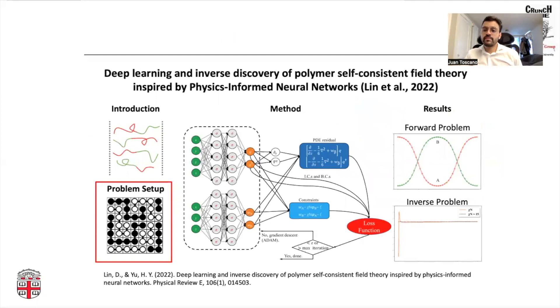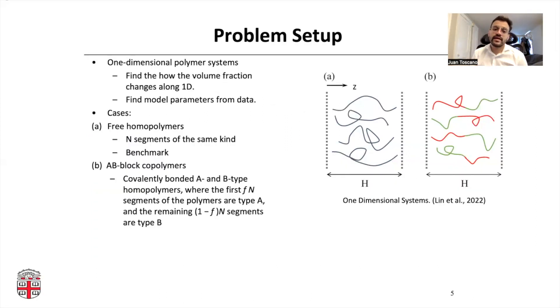Let's see the problem setup. The authors analyzed these one-dimensional polymer systems, and they will find how the local distribution of the polymers change along this 1D spatial domain. We'll have two cases.